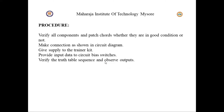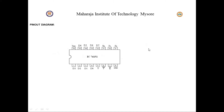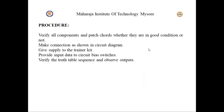The procedure is: first verify all the components and patch cords to check whether they are in good condition. Then make the connections as shown in the circuit diagram. Next, give the power supply to the trainer kit. Then provide the input data to the circuit via switches and verify the truth table sequence.